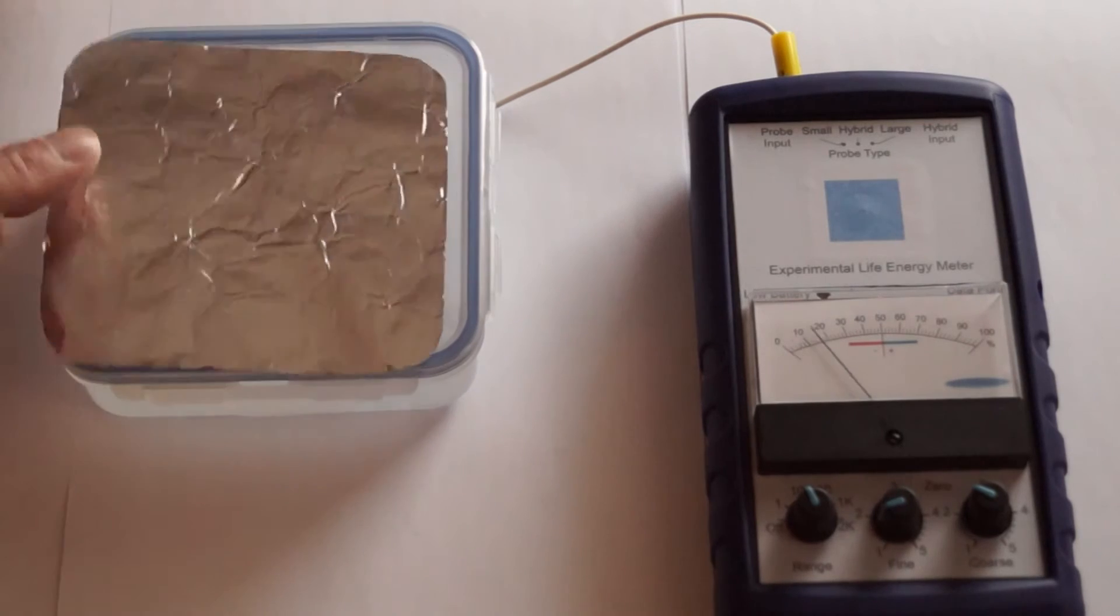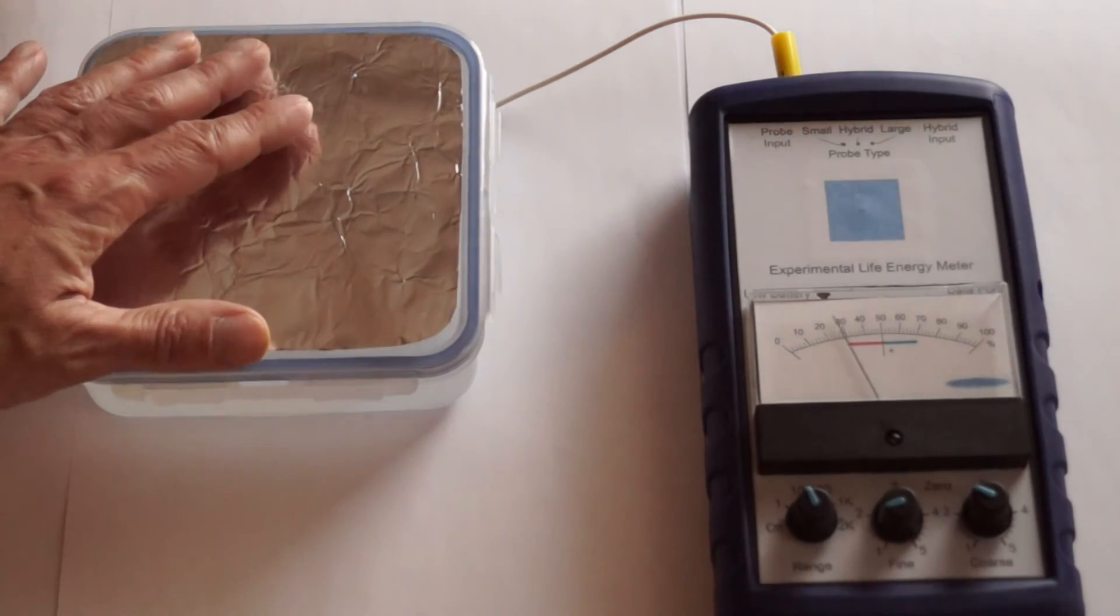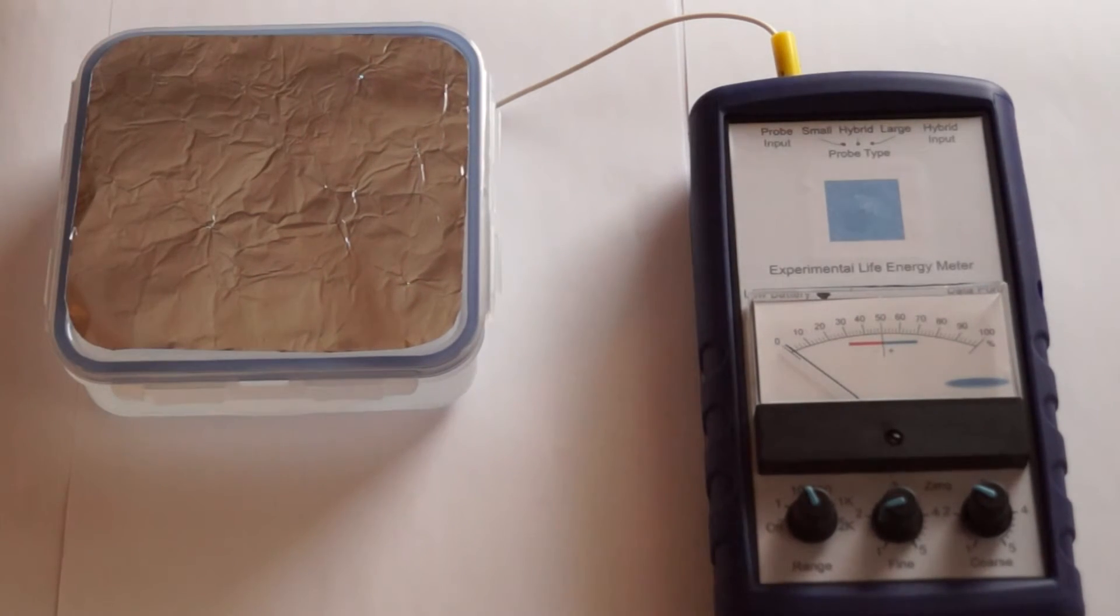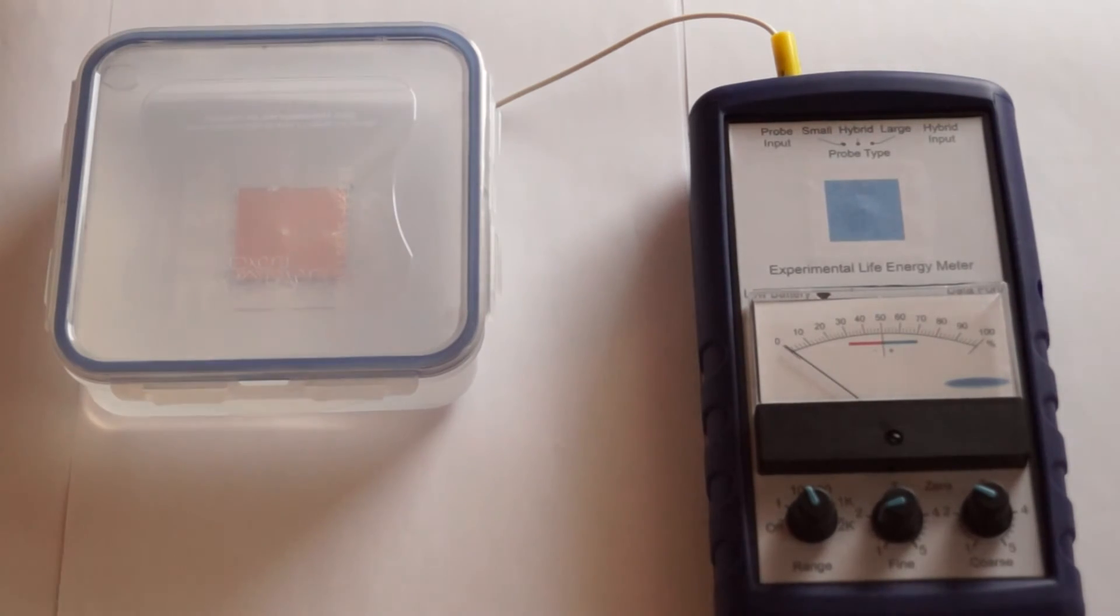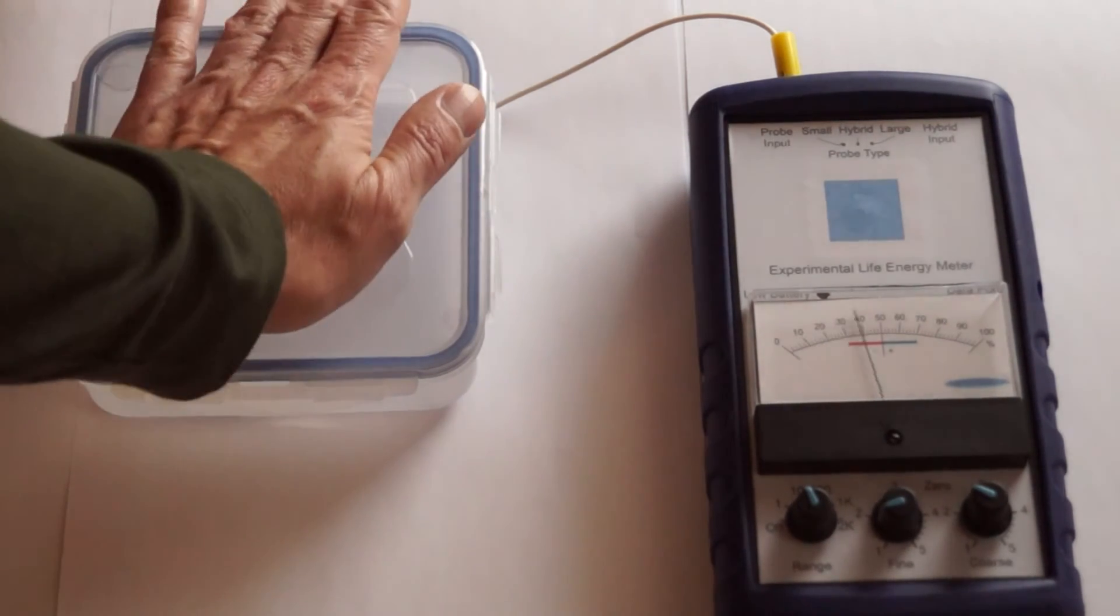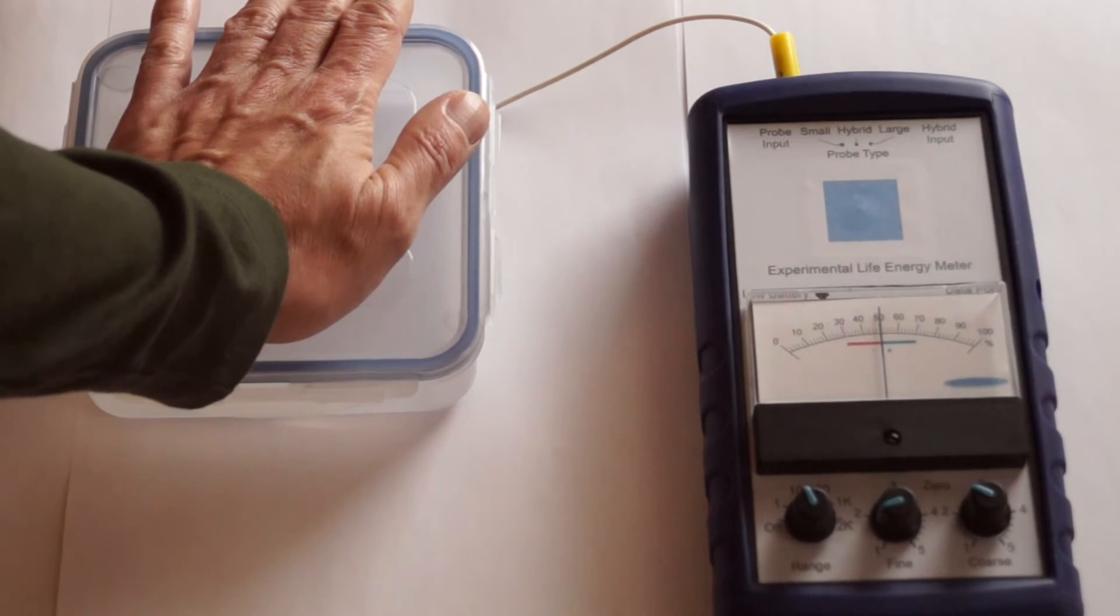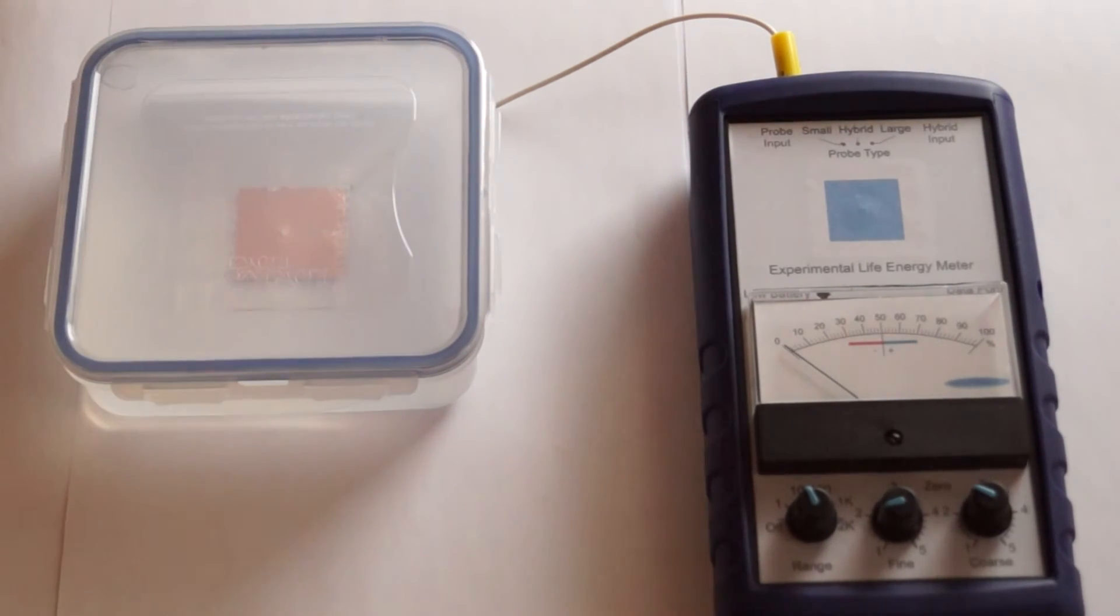We perform the same foil and hand experiment with the larger external probe filter. On x10, there is no noticeable movement of the needle with the foil. The actual reading on x100 is 4. The hand reads 50. This gives a ratio of 125.